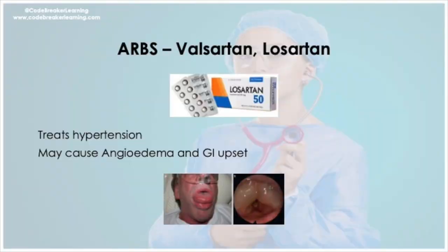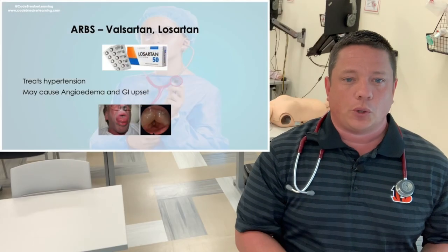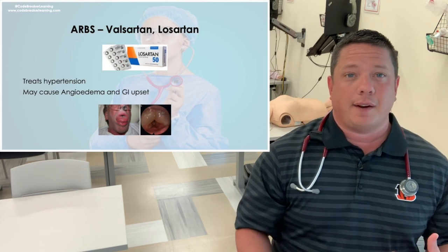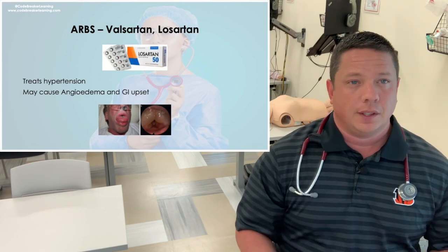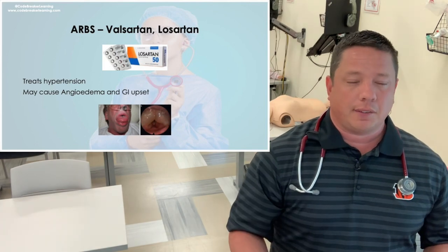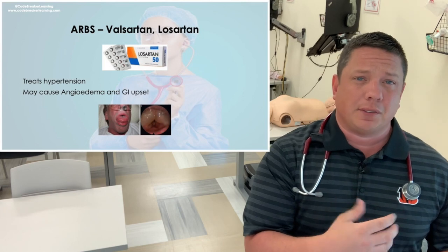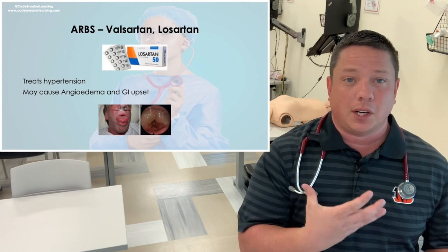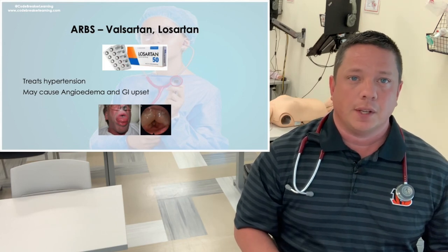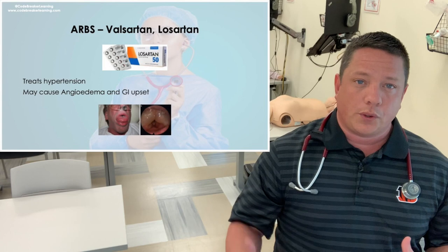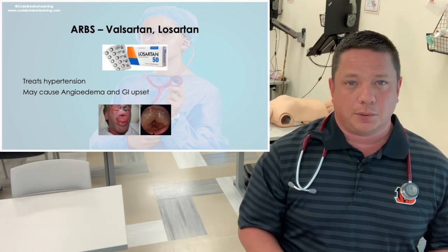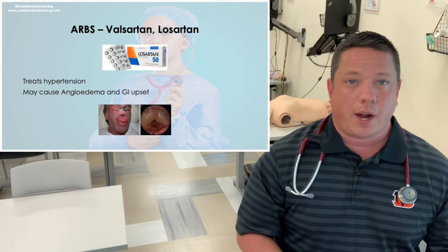ARB medications are going to be your Sartans — Valsartan and Losartan. These can additionally have an adverse effect of angioedema, which is the swelling of your mouth and tongue. It's kind of like an allergic reaction — if your tongue swells too much it may cause airway obstruction. ARBs like Losartan and Valsartan may also cause GI upset. Both of those medications are given for hypertension.